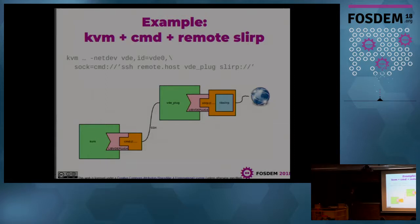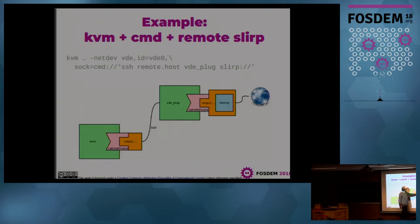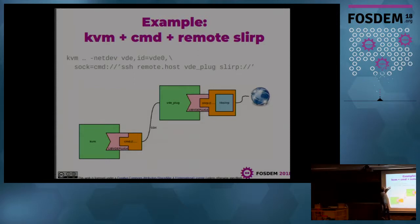For example, I want to run a KVM machine on my Linux box here and have it connected to the internet using the networking of a remote machine where I have only user access — no root access. I can do this with just a single command, because the locator is a command and inside that command I have the command to run the remote vdeplug.